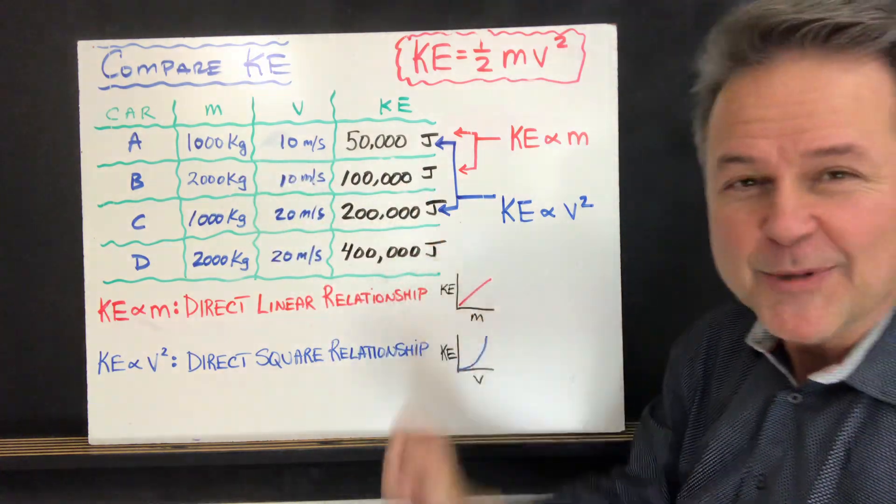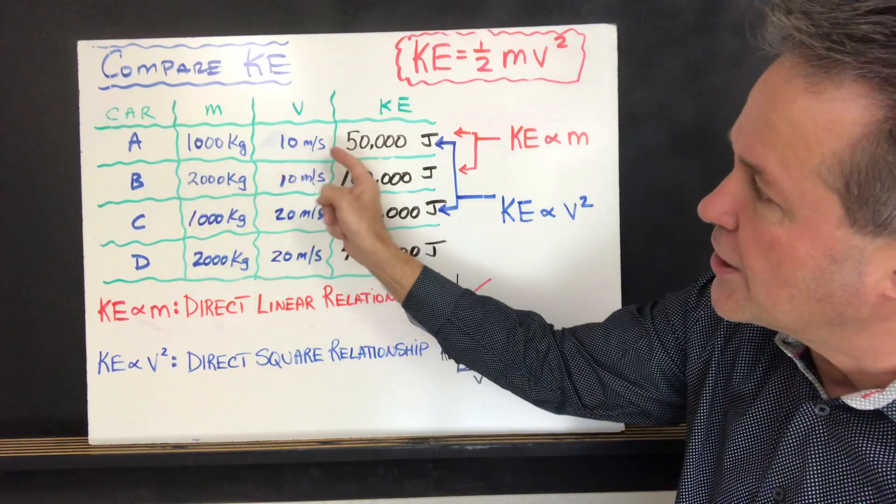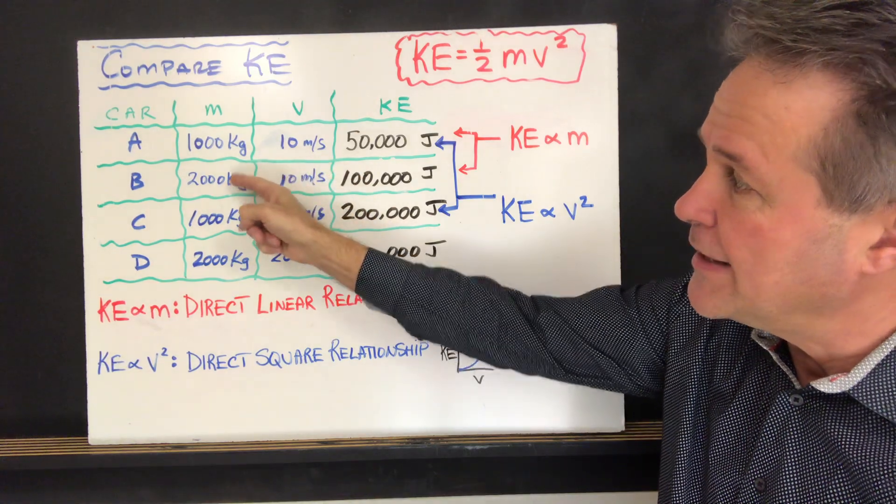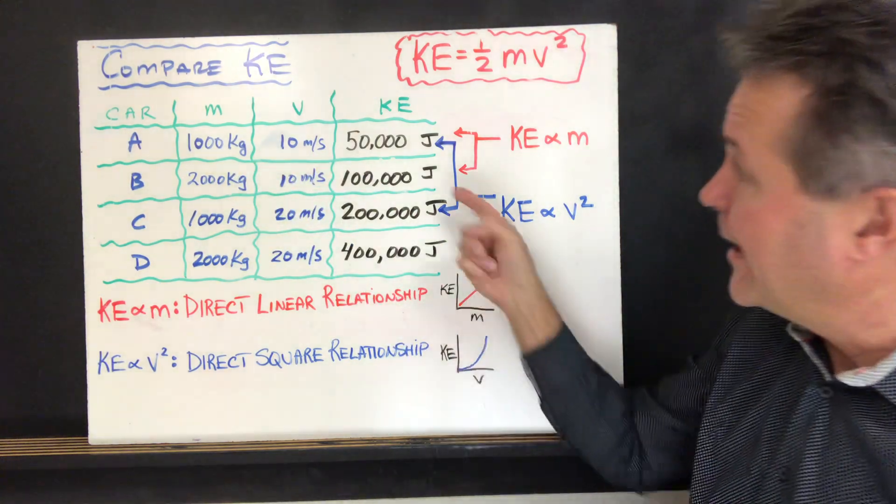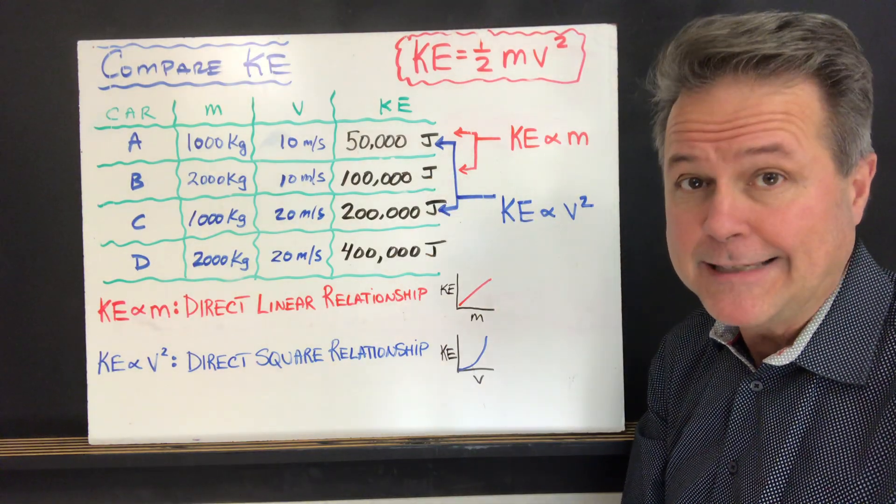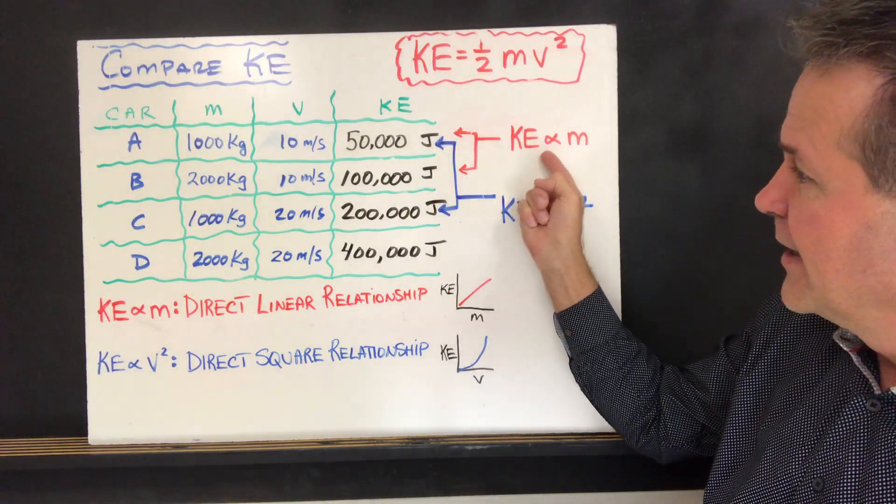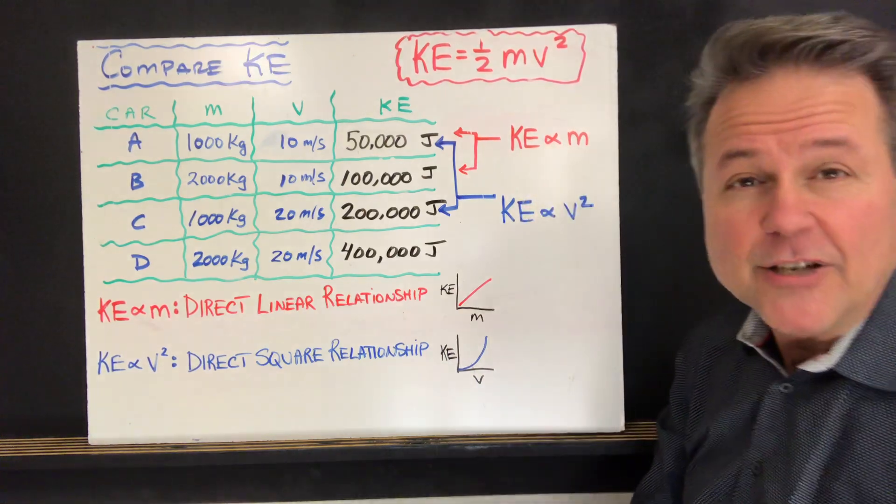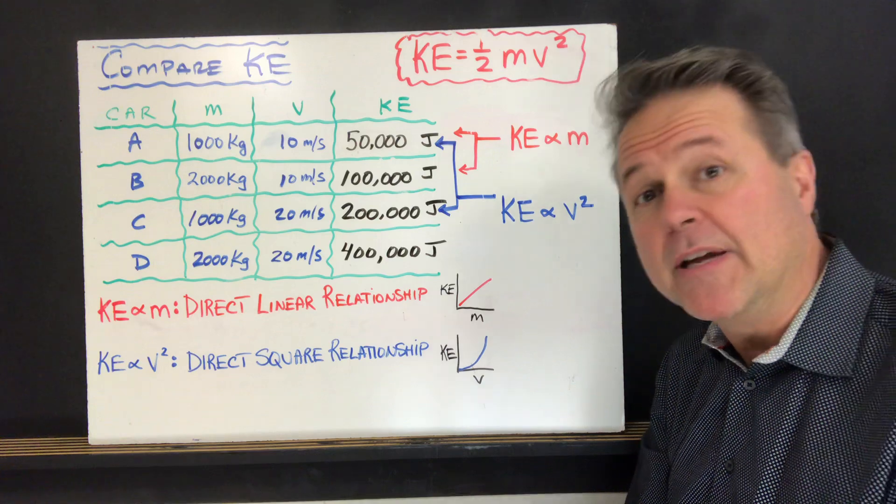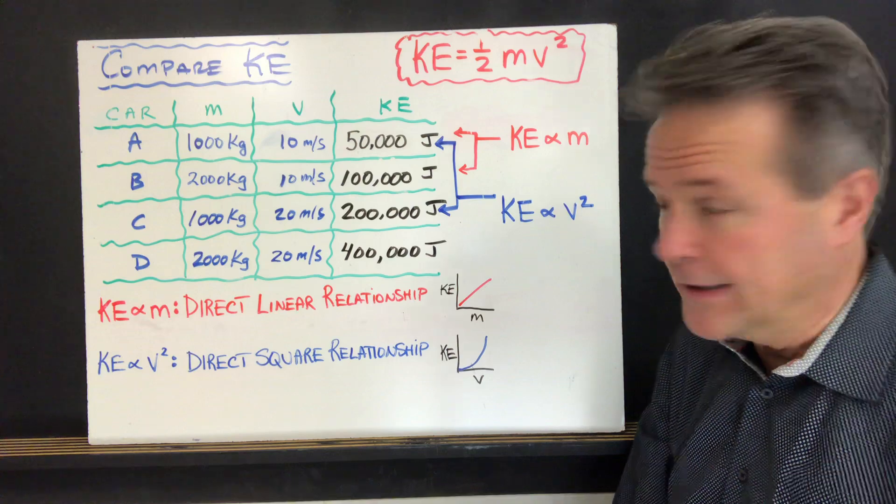But let's consider that these numbers are correct and compare car A to car B. Now you see car A and B both have the same velocity, but B has twice the mass of A. And B has twice the kinetic energy compared to A. Well, that makes sense because if you look at the kinetic energy formula, kinetic energy is a direct linear relationship with M. So they're directly related to one another. So if you increase the mass, you're going to increase the kinetic energy correspondingly.